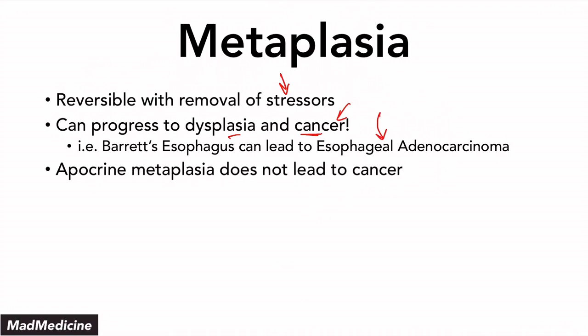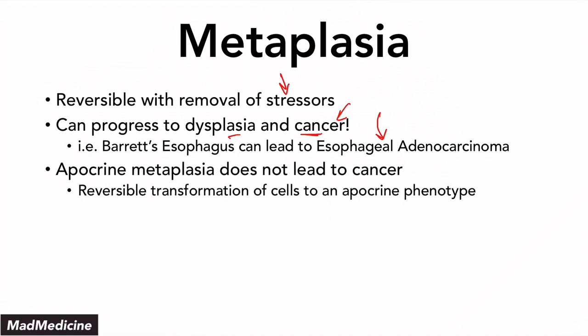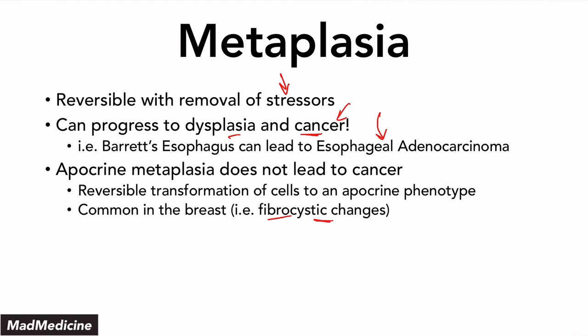One thing to remember is that apocrine metaplasia does not lead to cancer. In apocrine metaplasia, you have reversible transformations of cells to an apocrine phenotype. An example of this is the breast, where fibrocystic changes can be reversed — this is a type of apocrine metaplasia.